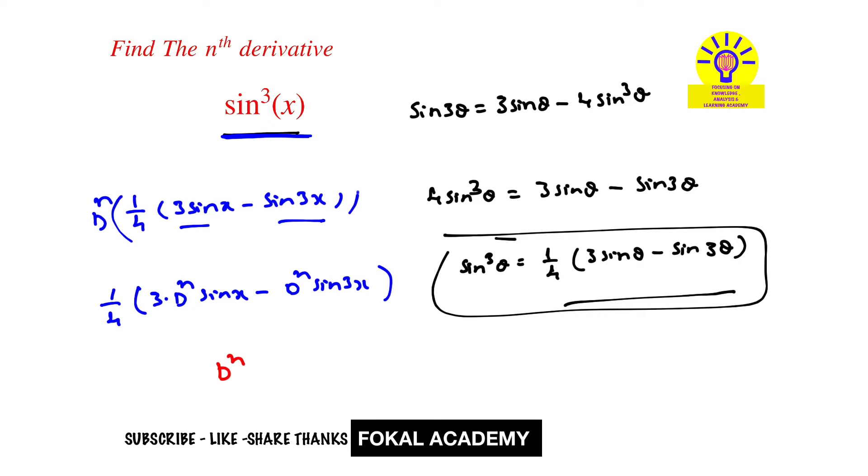Nth derivative of sin of ax plus b equals a power n into sin of ax plus b plus shifted by n pi by 2. Now it is the standard form. Now apply this formula for these two terms, so then we get...